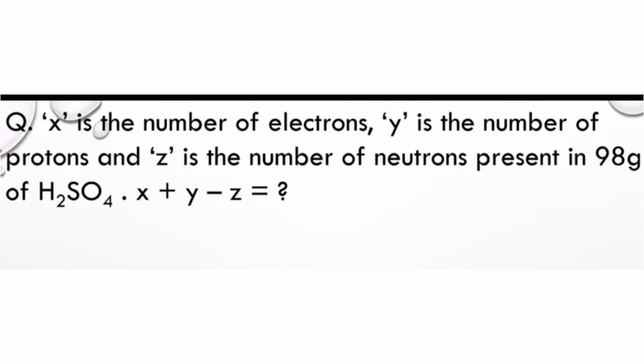Moving on, let's solve a quick question. If x is the number of electrons, y is the number of protons, and z is the number of neutrons present in 98 grams of sulfuric acid, then what is x plus y minus z?